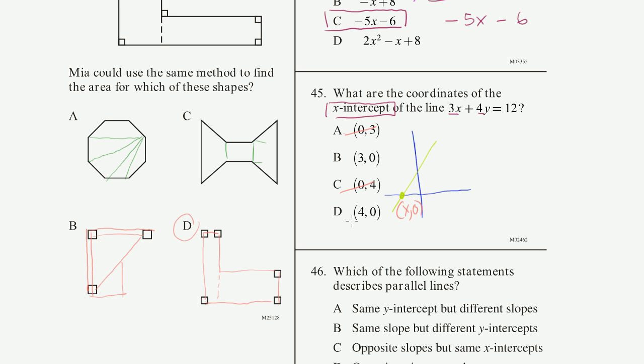If y is 0, let's just solve the equation. 3x plus 4 times 0 is equal to 12. Or we get 3x is equal to 12, that's just 0 right there. So x is equal to 4. So the x-intercept is 4 comma 0. x is 4, y is 0. So this is our choice right there.